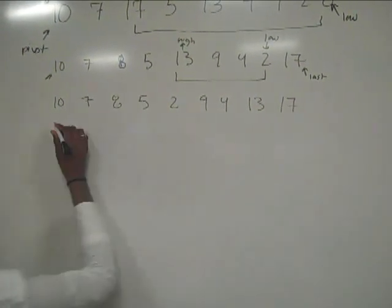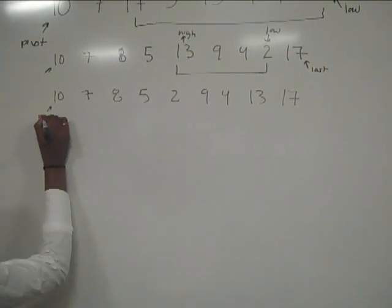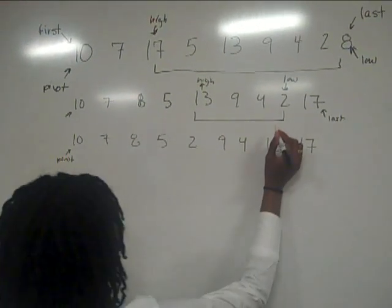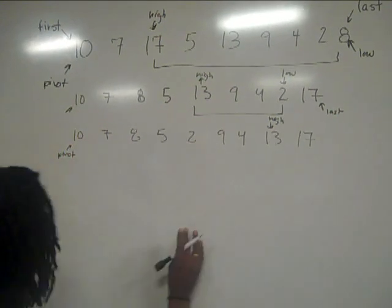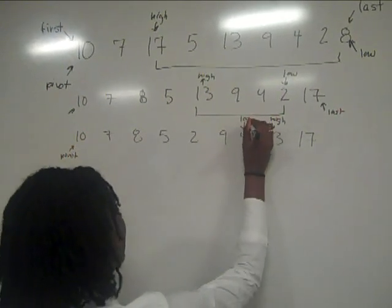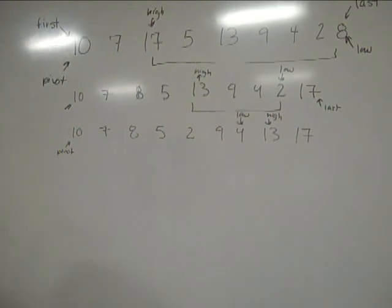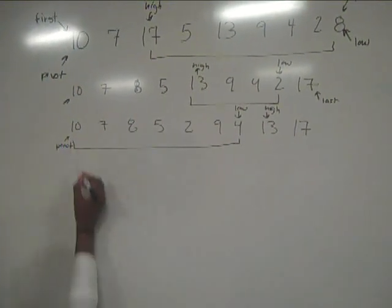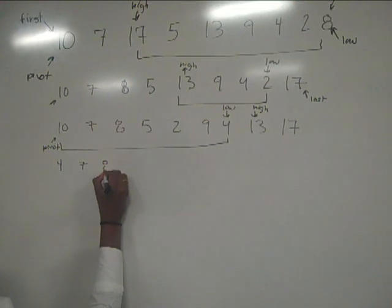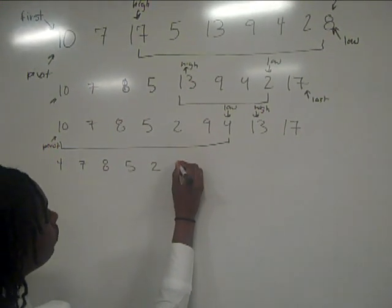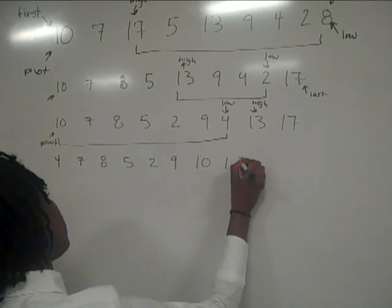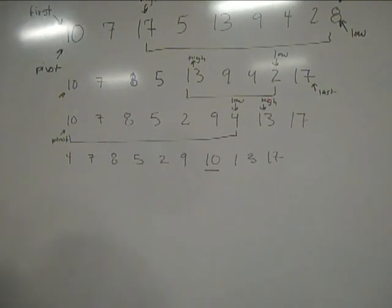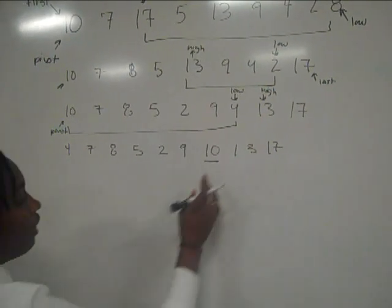Again you have your last and your first, with first being the pivot, 10. Find the first number higher than 10 from the left, which is now 13, and the first number lower than 10 from the right, which is now 4. As you see, the low and the high have now surpassed each other, in which case you swap the lowest number with the pivot, which is 10. Now the array shows the pivot in place, with values less than 10 on one side and values greater than 10 on the other.